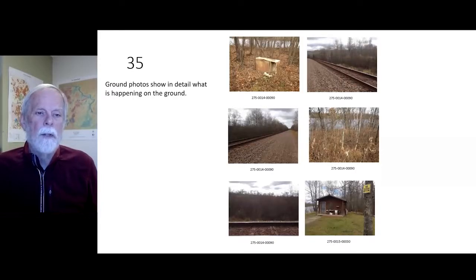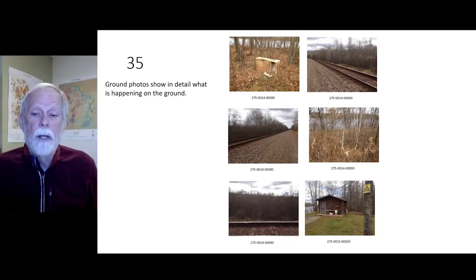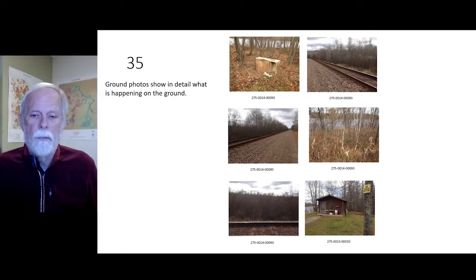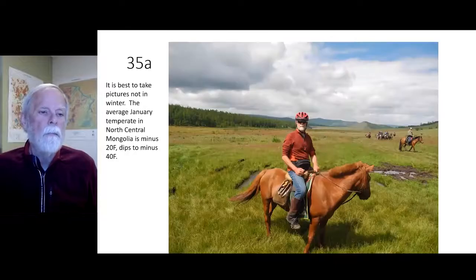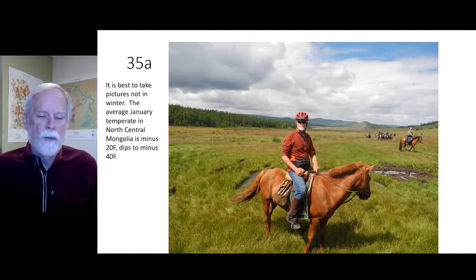Ground photos show in detail what is happening on the ground. In this case we have a trash refrigerator, railroads, and a cabin. Many times we just have forest. It's best to take pictures not in winter — the average January temperature in north-central Mongolia is minus 20 degrees Fahrenheit and dips to minus 40.